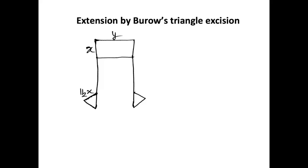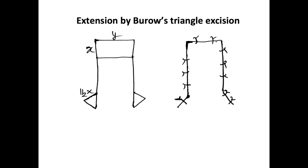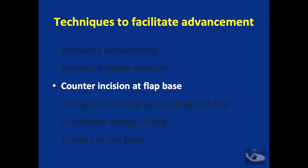The Burrow's triangle must be marked as an equilateral triangle with the side equal to half the advancement needed — that is, half x. This will be the resulting suture line after advancement of the flap following excision of the Burrow's triangle. A counter incision at the flap base can also help advance the flap, but care must be taken that this back cut does not compromise the vascularity of the flap.